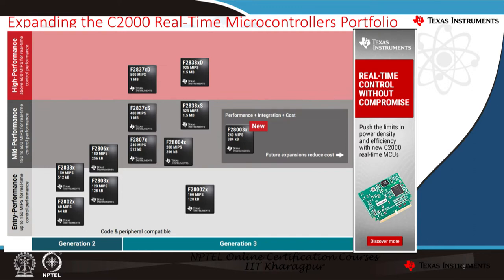Looking at the C2000 real-time microcontroller portfolio, devices are classified into two generations — Generation 2 and Generation 3 — and by performance: entry, mid, and high. Devices like F2802X, F2803X, and F2806X are entry performance at around 150 MIPS. Mid performance covers 150 to 600 MIPS and includes F2837XS, F2838XS, F28004X, and the newly introduced F28003X. Beyond 600 MIPS, F2837XD and F2838XD deliver 800 MIPS and 925 MIPS respectively for high-end applications.